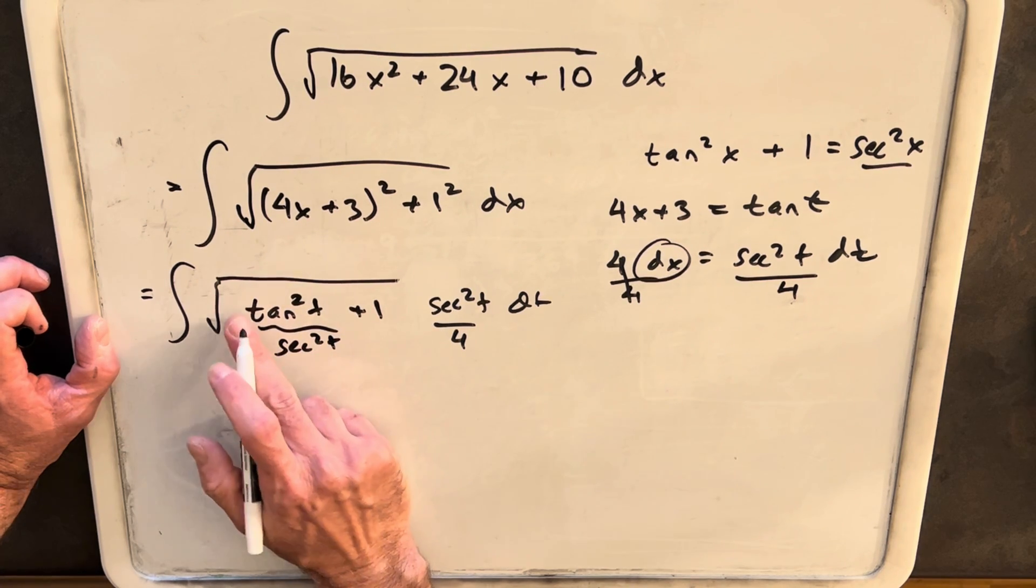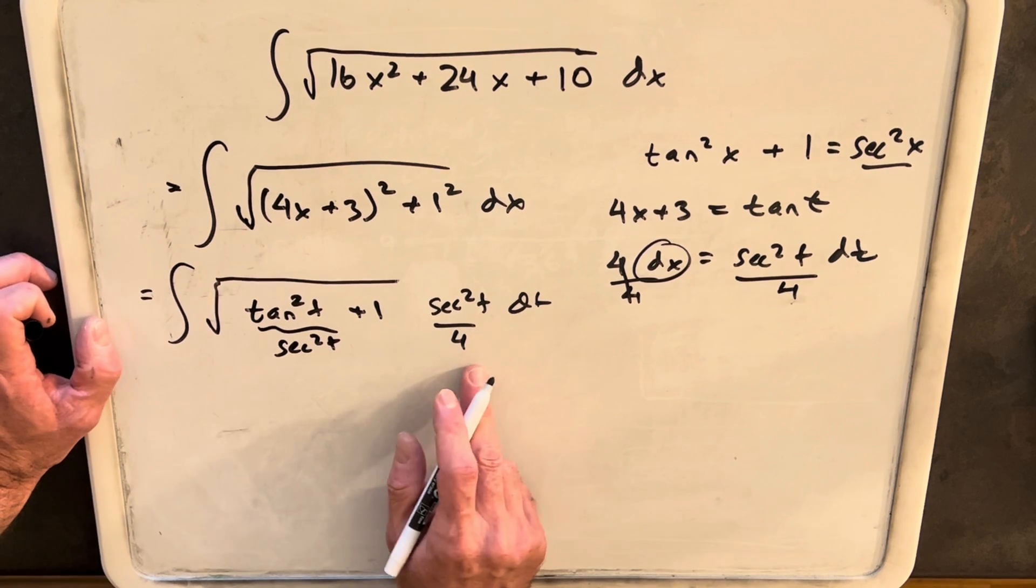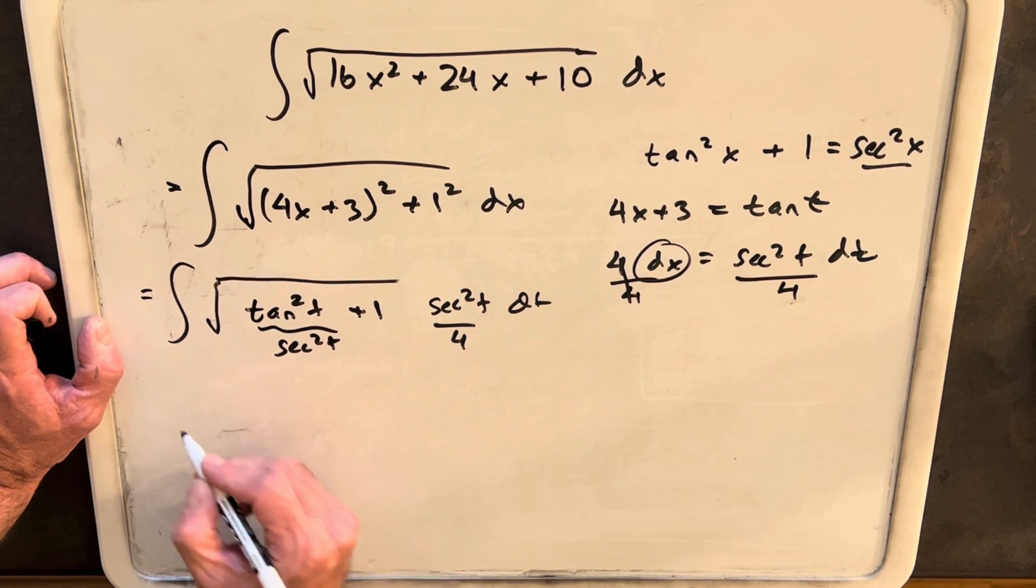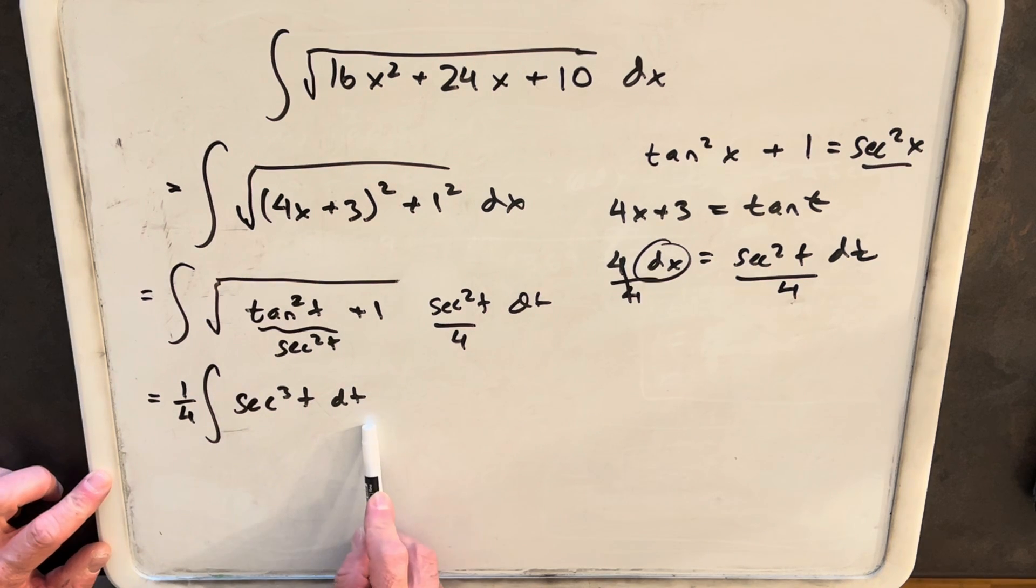But it's under the square root, so the square root of secant squared is just secant. So then we'll rewrite this and bring a 1 fourth out front. So what we can do next is really just integrate secant cubed t.